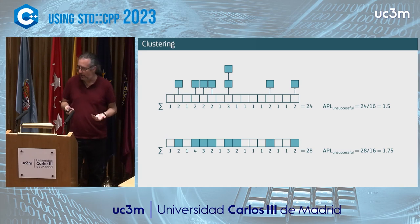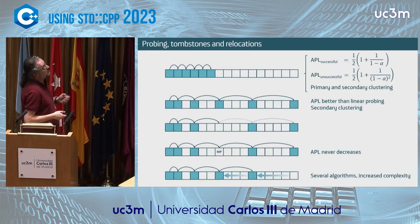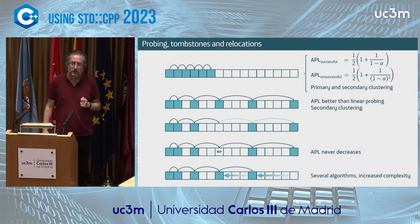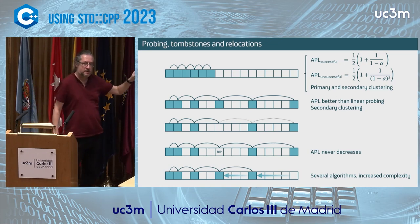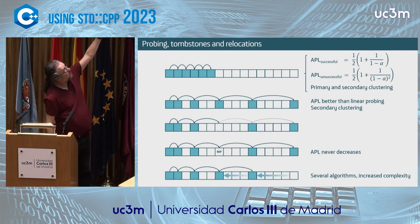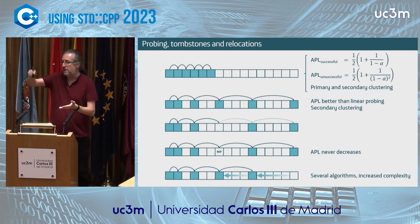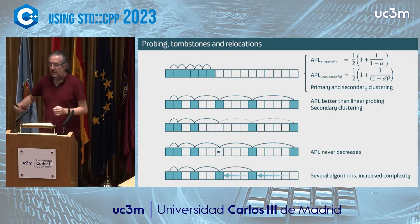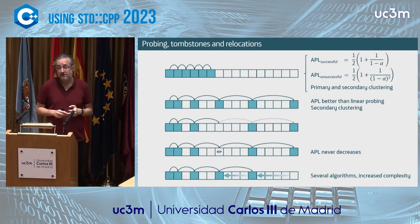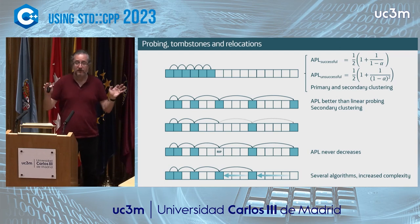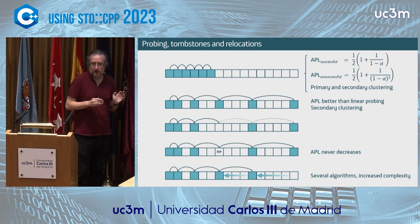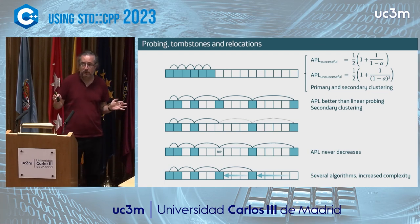These formulas for average probe length for successful and unsuccessful lookup were first derived by Donald Knuth. The key variable alpha is the load factor — the number of elements divided by the number of slots. For linear probing, the average probe length tends to infinity as the load factor tends to 1. So the load factor is very critical with open addressing tables, and you cannot possibly have a load factor as high as 1. Whereas with closed addressing you can easily set a maximum load factor of 1 or even higher.